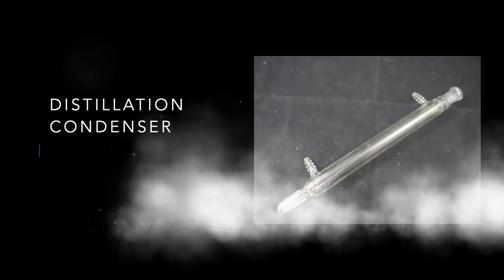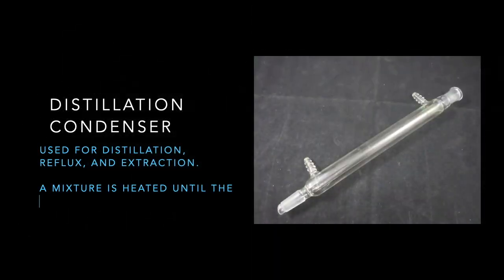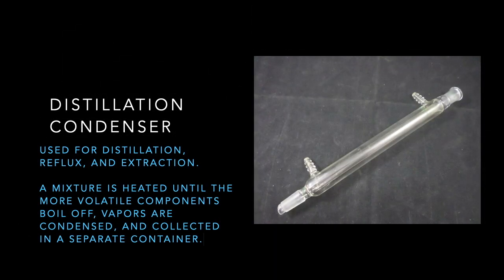Distillation condenser: used for distillation, reflux, and extraction. A mixture is heated until the more volatile components boil off. Vapors are condensed and collected in a separate container.